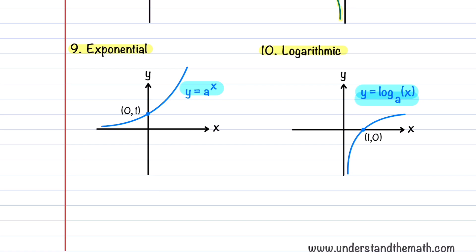The exponential function is a rapidly increasing function, is always positive, passes through the point (0,1), and has a horizontal asymptote at y = 0 (the x-axis). It's defined for all values of x. The logarithmic function is only defined for x greater than or equal to zero, is a curve that slowly increases, and has a vertical asymptote at x = 0. It passes through the point (1,0).